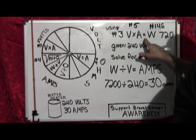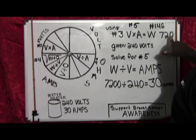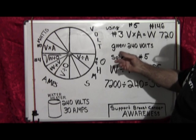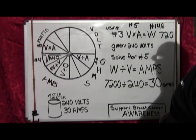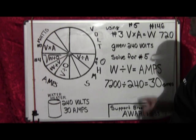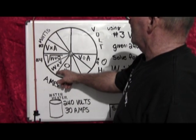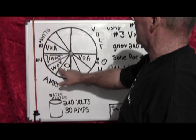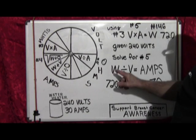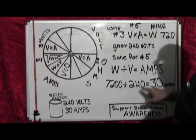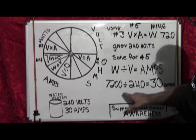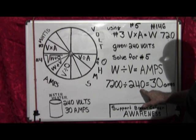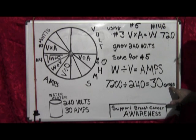To finish up, we use number three: volts times amps equals watts, which is 7200. We already had a given of 240 volts. So to solve for number five, which is watts divided by volts equals amps: 7200 divided by 240 gives us 30 amps. So everything fits together just right.